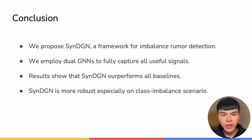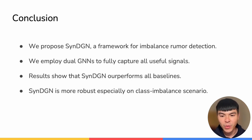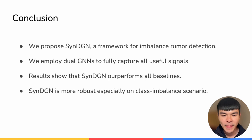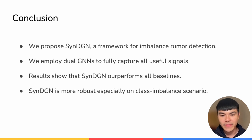In conclusion, we propose a framework called SynthDGN for imbalanced rumor detection. We employ two GNNs to fully capture all useful signals from users and from tweets. The experimental results show that SynthDGN outperforms all competitive baselines, and we also conduct analysis to show that SynthDGN is more robust, especially on class imbalance scenarios. Thanks for listening.